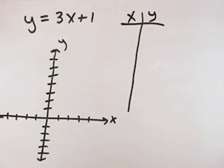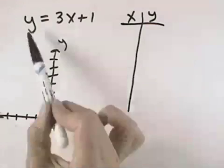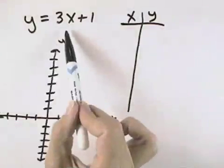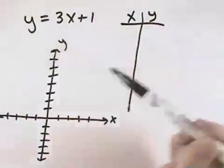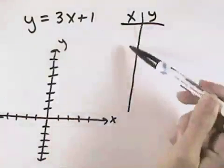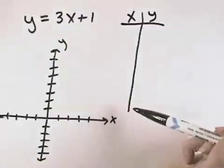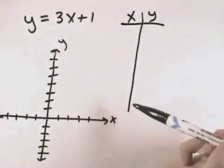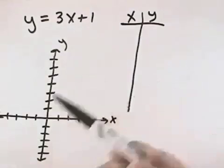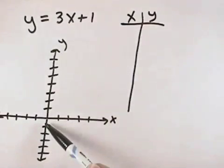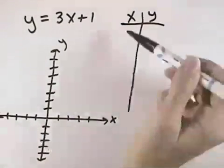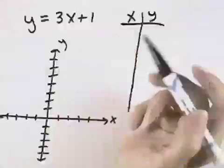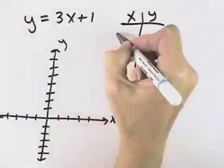For this problem, we want to find five solutions of y equals 3x plus 1. We want to organize our work for those solutions in a table form so that we can use these values to then graph our equation. So I'm going to choose x values, any five I'd like, to come up with my five points.